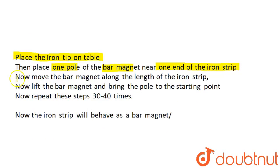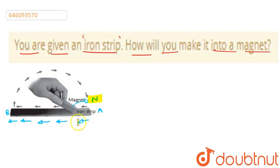Now, move the bar magnet along the length of the iron strip. Just like I have told you. From point A to point B, we have moved it. Okay? Slide it.